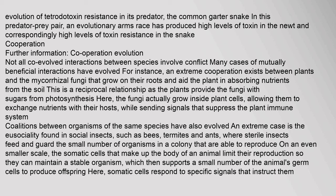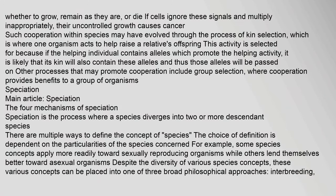An extreme case of intraspecies cooperation is the eusociality found in social insects such as bees, termites, and ants, where sterile insects feed and guard the small number of organisms in a colony that are able to reproduce. On an even smaller scale, the somatic cells that make up the body of an animal limit their reproduction to maintain a stable organism, supporting a small number of germ cells to produce offspring. If cells ignore signals and multiply inappropriately, their uncontrolled growth causes cancer. Such cooperation within species may have evolved through kin selection, where one organism acts to help raise a relative's offspring.